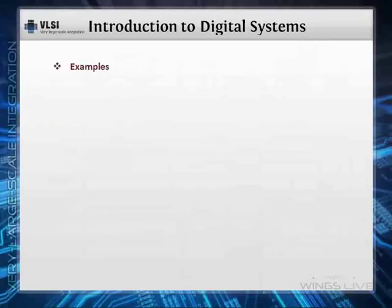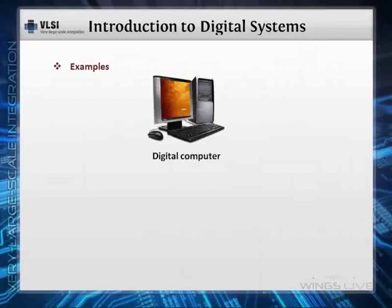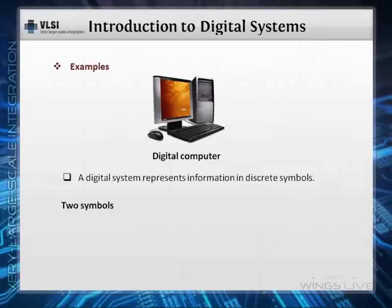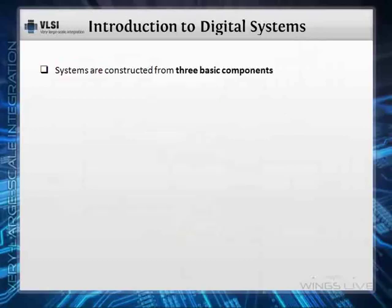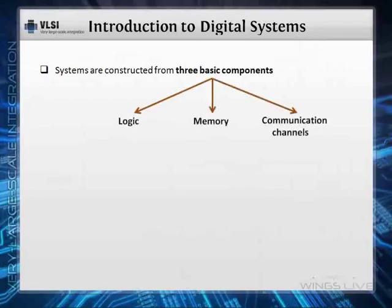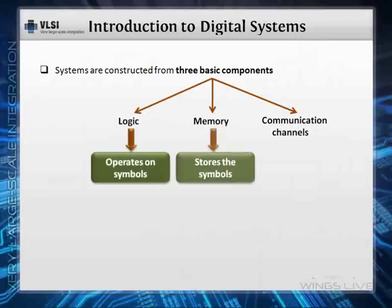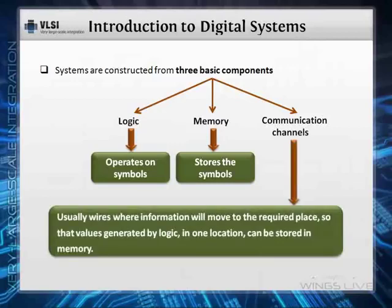One of the best examples of a digital system is our general purpose digital computer. A digital system represents information in discrete symbols. Most systems use just two symbols, denoted by binary digits or bits — zeros and ones — to represent all information. These systems are constructed from three basic components: logic, memory, and communication channels. Logic operates on symbols, memory stores the symbols, and communication channels are usually wires where information moves to the required place so that values generated by logic in one location can be stored in memory.